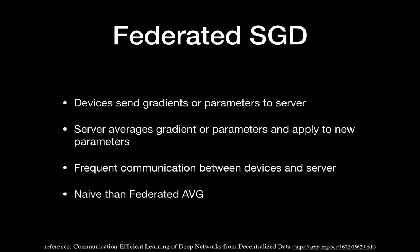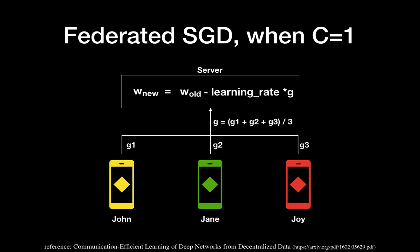Let's talk about Federated SGD. The takeaway: devices send gradients or parameters to the server, and the server averages the gradients or parameters and applies them to the new parameter. We expect more frequent communication between the device and server compared to Federated AVG. Here's how Federated SGD works when C equals 1. John, Jane, and Joey train locally and calculate gradients G1, G2, and G3. The server collects G1, G2, G3 and computes the average: (G1 + G2 + G3) / 3. Using gradient descent, the new weight = old weight minus learning rate times the average gradient.